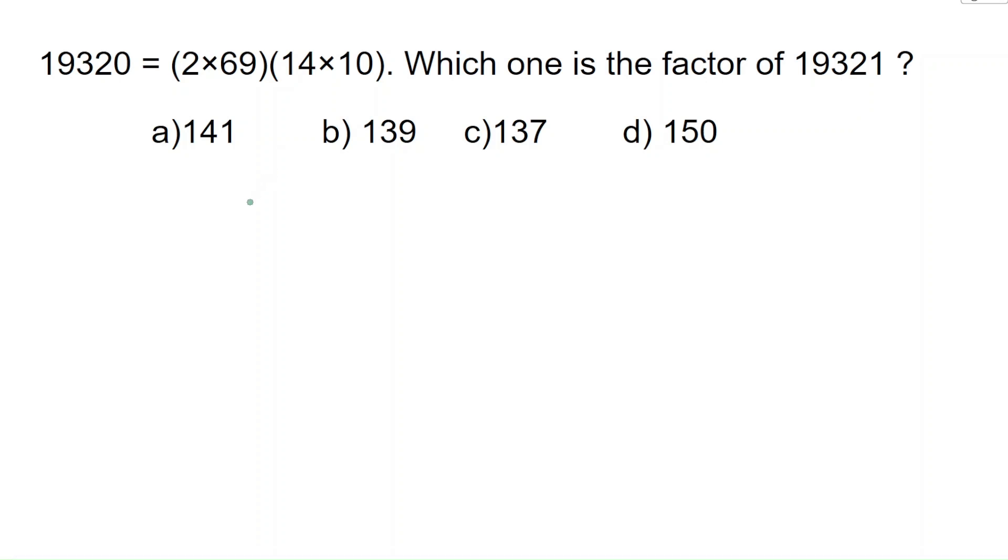Hello friends, here they have given 2 times 69 and 14 times 10 equals 19,320. Which one is the factor of 19,321?